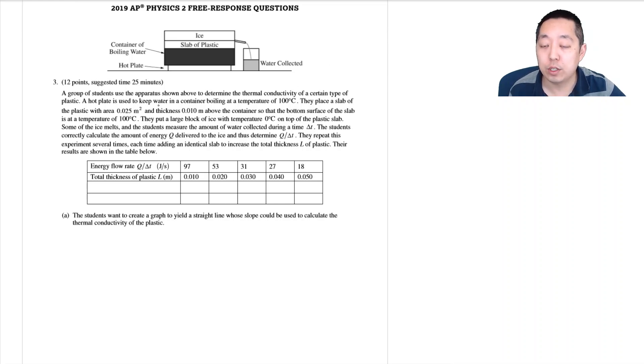So here's number three. A group of students use the apparatus shown above to determine the thermal conductivity of a certain type of plastic. A hot plate is used to keep water in a container boiling at a temperature of 100 degrees C. They place a slab of the plastic with an area 0.025 meters squared and thickness 0.01 meters above the container so the bottom surface of the slab is at 100 degrees Celsius. They put a large block of ice with temperature 0 degrees on top of the plastic slab. Some of the ice melts and students measure the amount of water collected at time delta T. They repeat this experiment several times, each adding identical slabs to increase the total thickness L of the plastic. The results are shown in the table below.